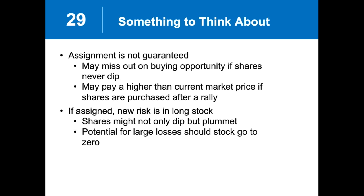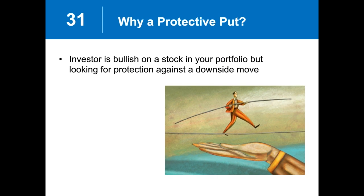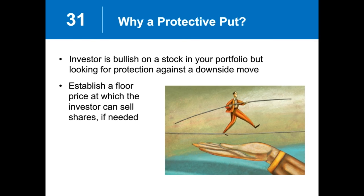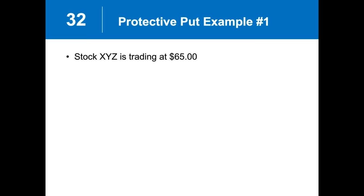Those are the first two strategies. Now let's discuss the protective put, as I turn things over to my colleague Bill Ryan. Thanks, Ed. We're talking about protective puts, and the first question is: why would we want to buy a protective put? An investor might be bullish on the stock but is looking for protection against a move to the downside — looking to establish a floor price at which they'll sell their stock, or for investors with an over-concentration in a particular security who want to take some money off the table and diversify or protect that large portion of their portfolio.